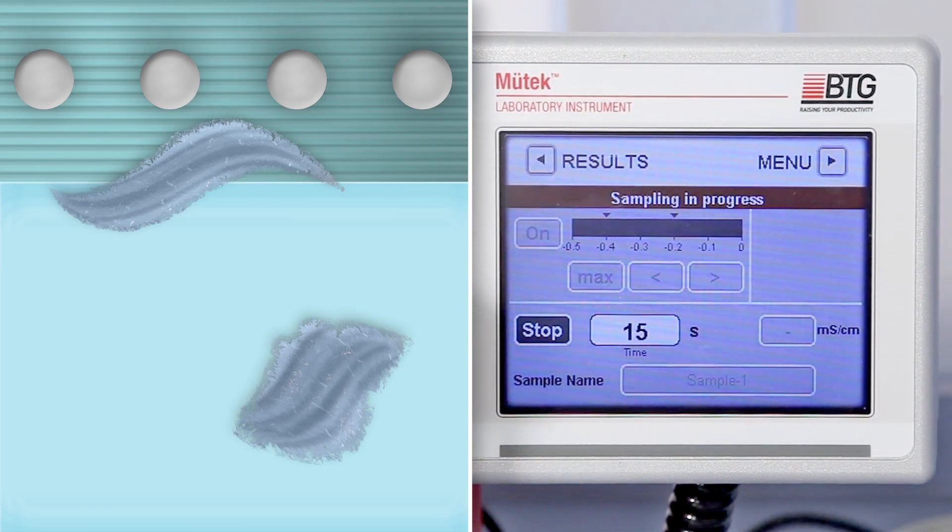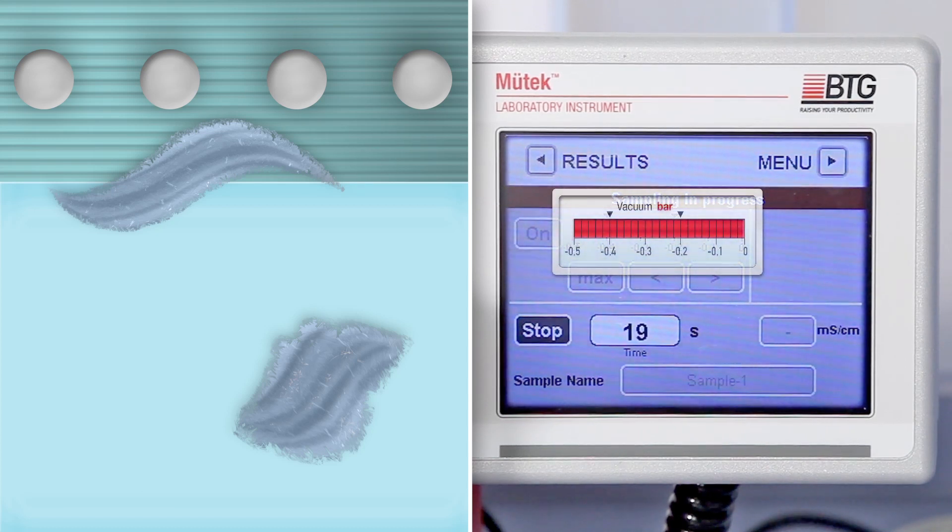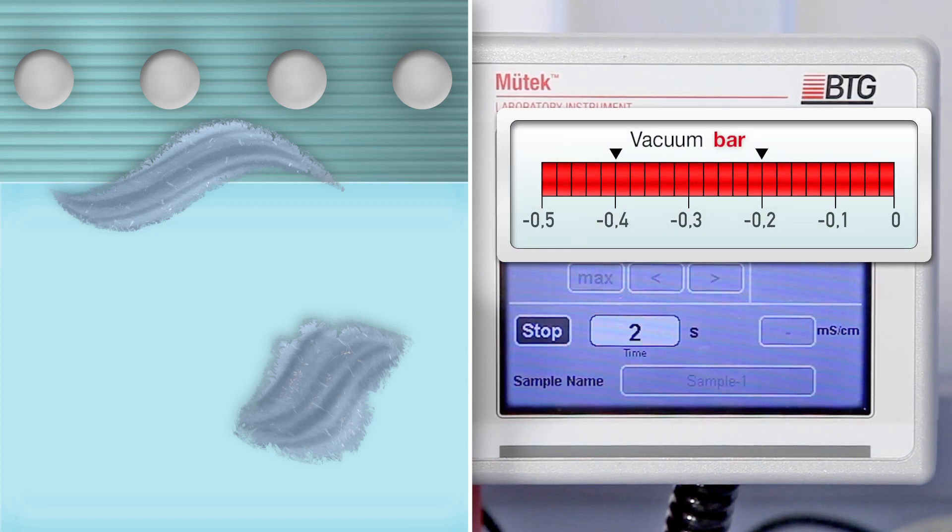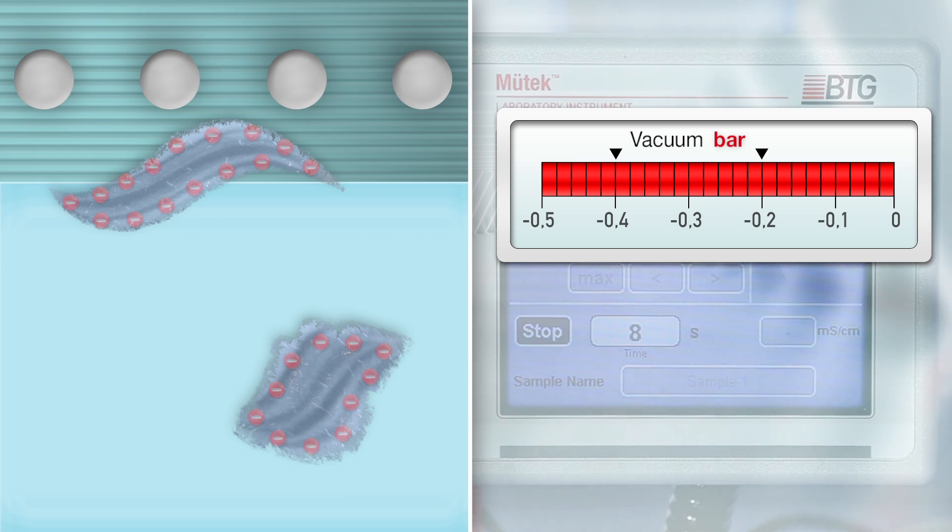The vacuum applied by the instrument is at a maximum during the time of sampling. In our example, the sample contains negatively charged fibers, which carry an anionic surface charge.